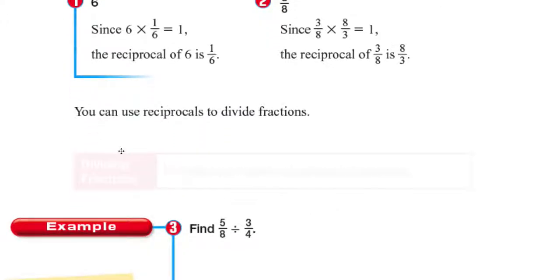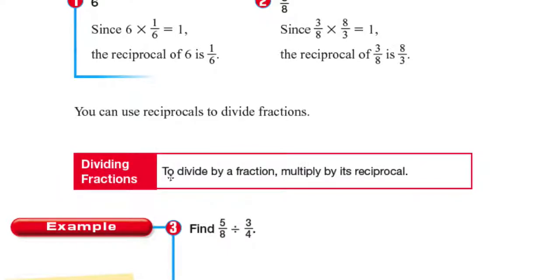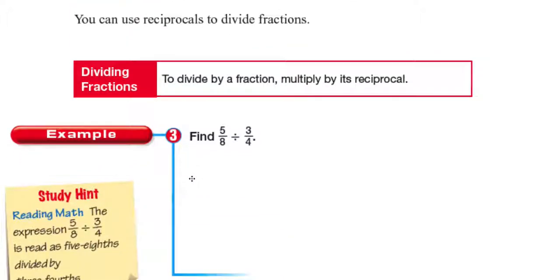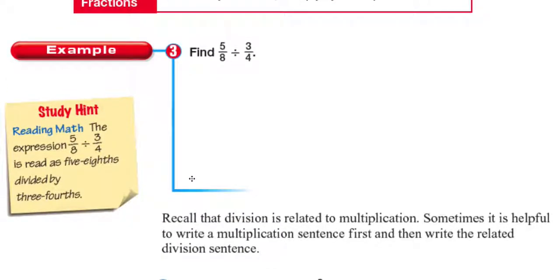This is where our rule comes in. To divide a fraction, you need to multiply it by its reciprocal. Let's take a look at example number three: five over eight divided by three-fourths. The expression five over eight divided by three over four is read as five-eighths divided by three-fourths.